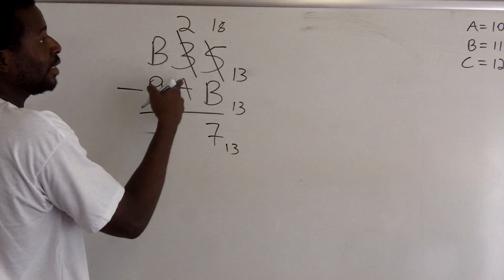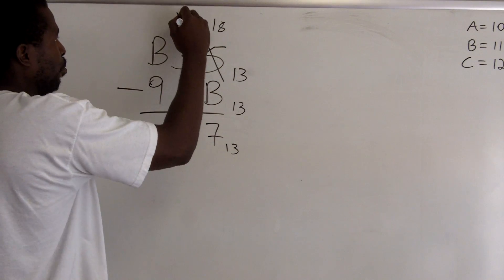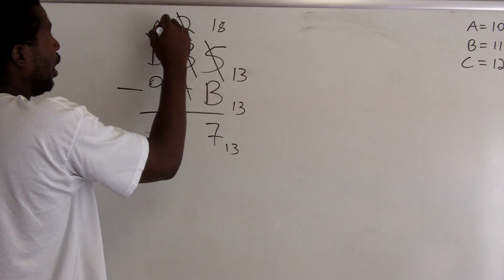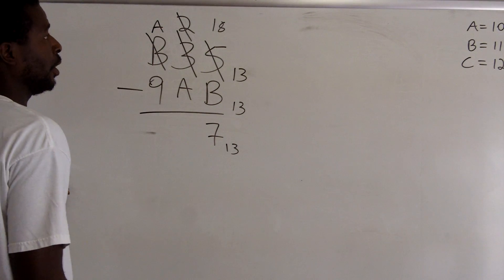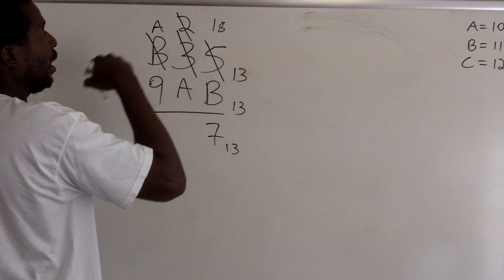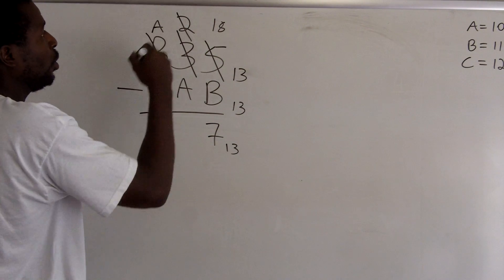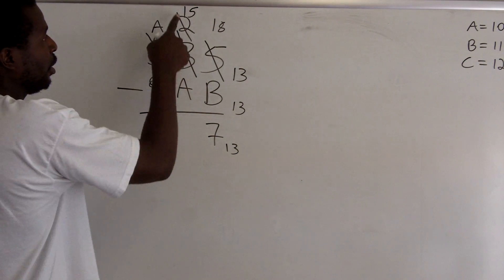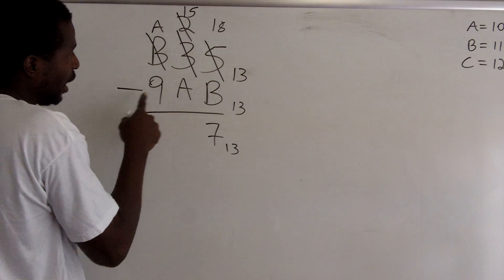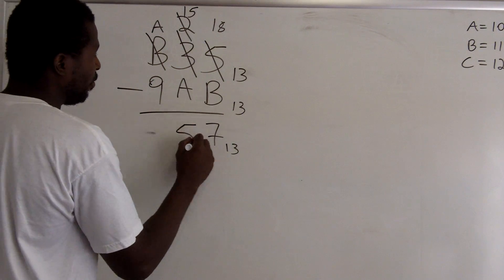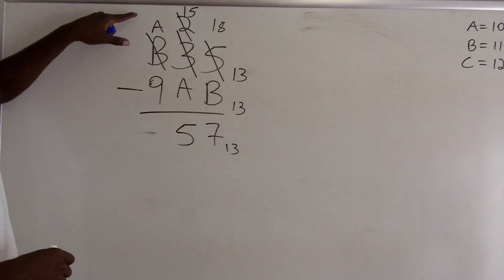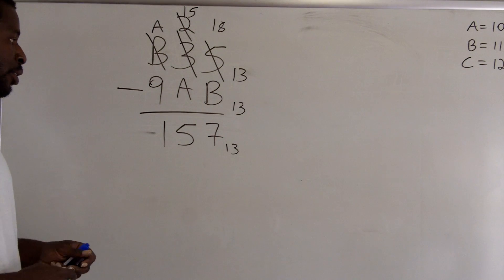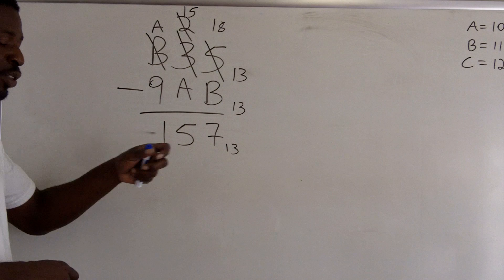Next, A is 10 and I can't take 10 away from 2, so I borrow again. B becomes A, or 10. I add 13 to the 2, giving 15. 15 minus A is 15 minus 10, which is 5. Finally, A minus 9 is 10 minus 9, which is 1. So the final answer for this subtraction is 157 base 13.